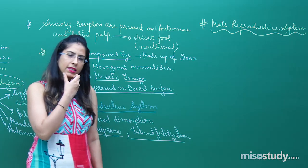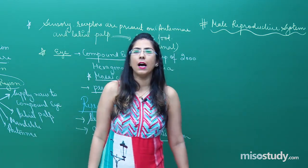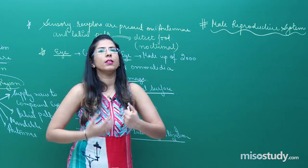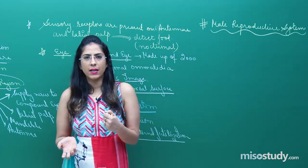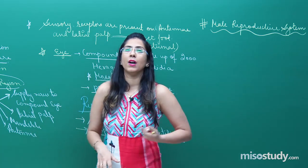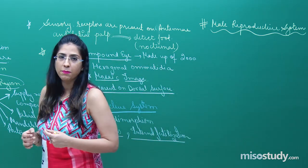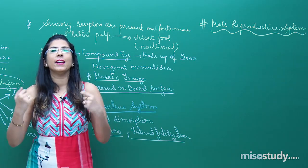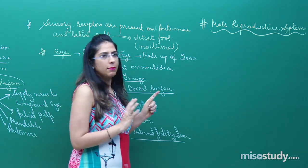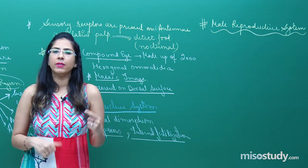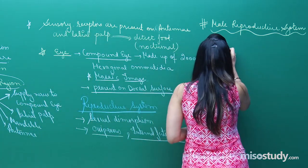In the male reproductive system, the testes are present, along with seminal vesicles, vasa deferentia, a phallic gland, a mushroom gland, an ejaculatory duct, and a pseudopenis. Let me draw the diagram first and then we will proceed.